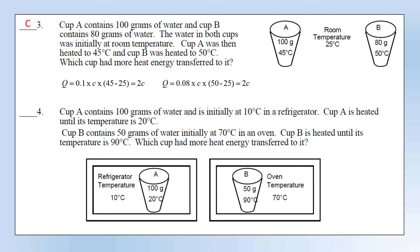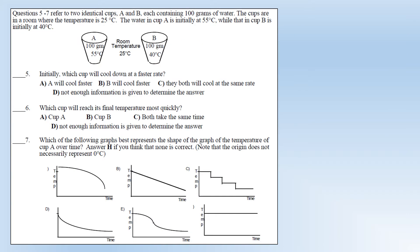Question four: cup A contains 100 grams of water initially at 10 degrees in a refrigerator, heated until its temperature is 20 degrees - so a temperature change of 10. Cup B has 50 grams of water initially at 70, heated until it's 90. Mass 0.1 kg, temperature change of 10 gives Q = 1C. On the right: 50 grams, temperature change of 20 gives Q = 1C. So they are the same.